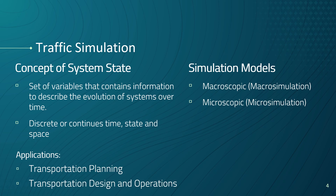Traffic simulation models are useful from macroscopic, microscopic and sometimes mesoscopic perspectives. The macroscopic models consider the aggregate behavior of traffic flow, while microscopic models consider the interaction of individual vehicles. Simulation can be applied to both transportation planning and transportation design and operations. For example, in transportation planning, the simulation models evaluate the impacts of regional urban development patterns on the performance of the transportation infrastructure.